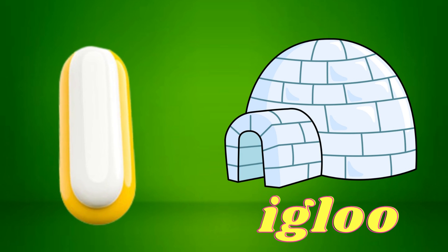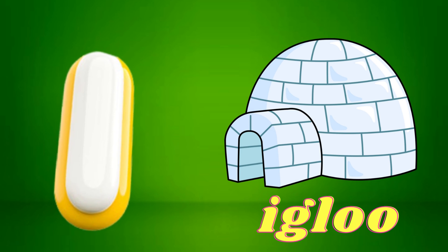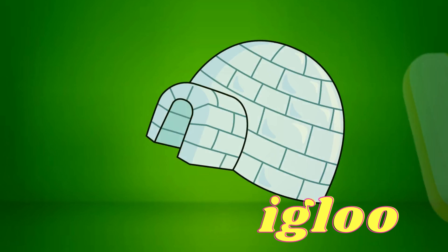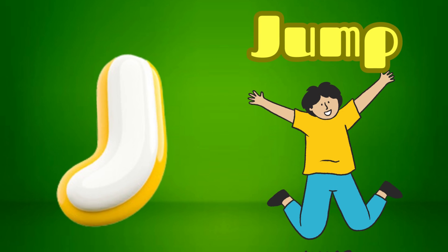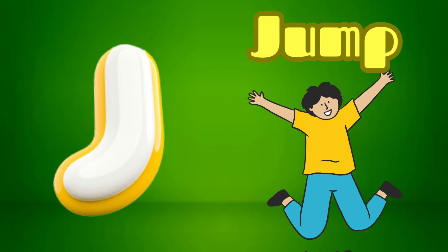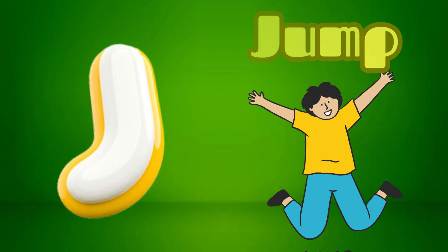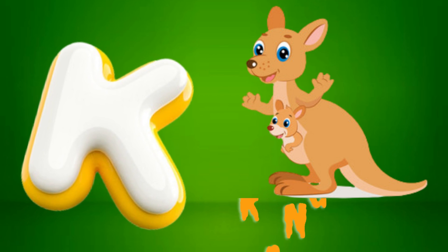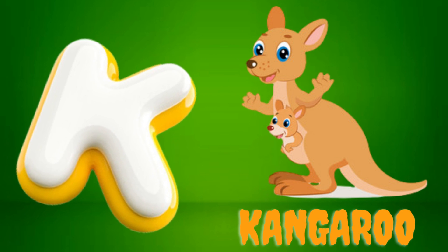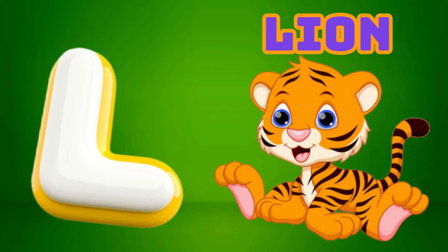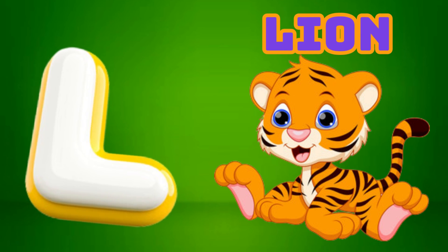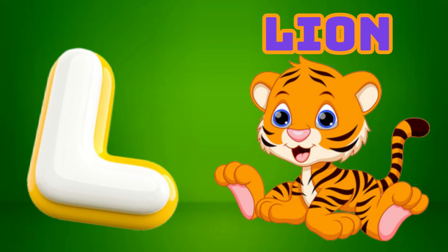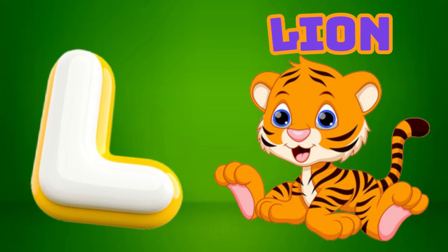I is for Igloo, I-I-Igloo. J is for Jump, J-J-Jump. K is for Kangaroo, K-K-Kangaroo. L is for Lion, L-L-Lion.